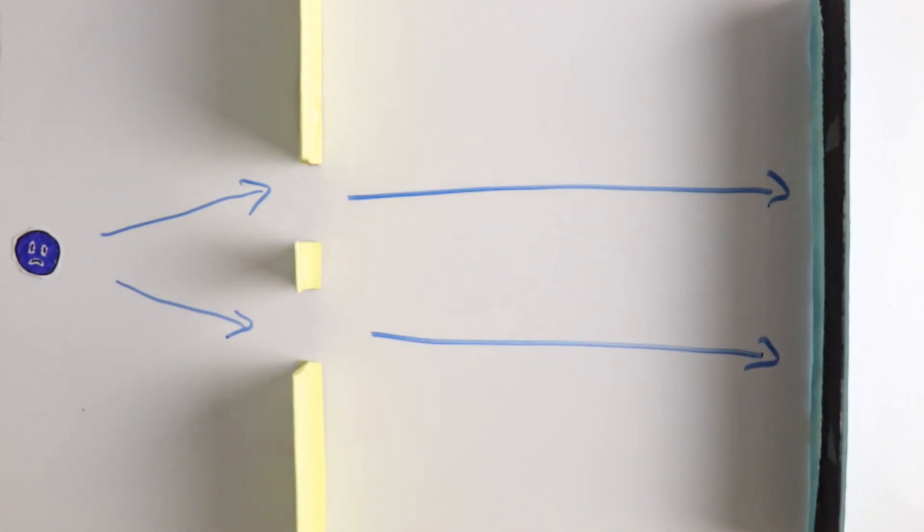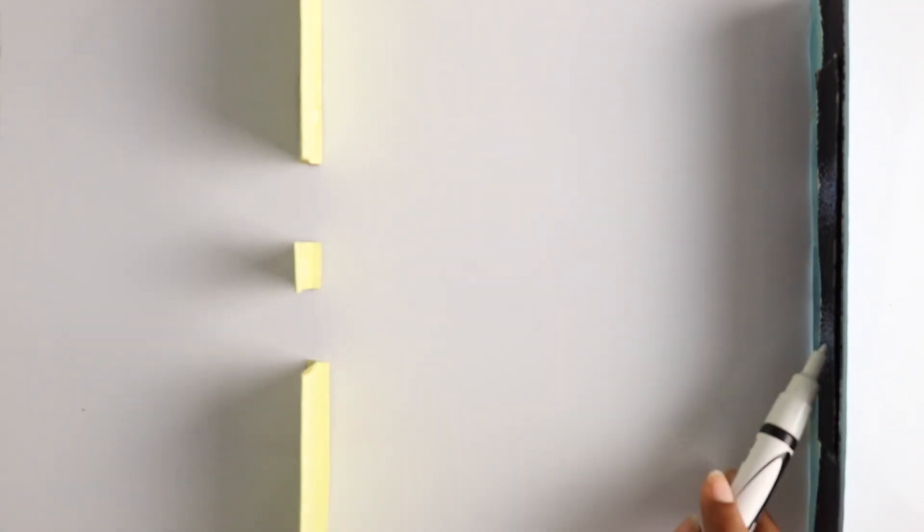We'd imagine the electrons doing something like this, so that the electrons that make it through are all clumping up in two spots.